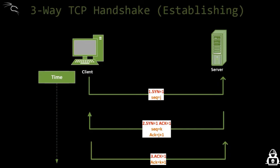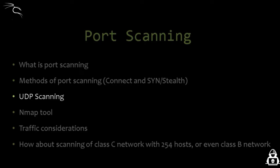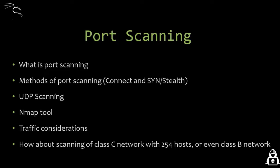It is called stealth because with early and primitive firewalls, opening half a three-way handshake connection often bypassed the firewall's logging. However, this is no longer the case with modern firewalls, as your scans will be detected. UDP scanning is different from TCP scanning — TCP is connection-oriented while UDP is stateless, so it doesn't involve the three-way handshake mechanism.